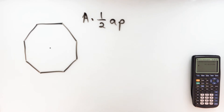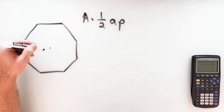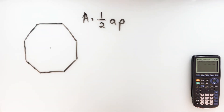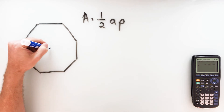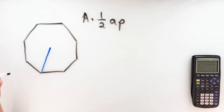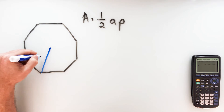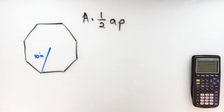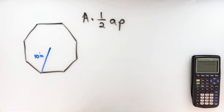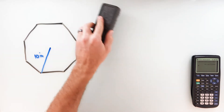Formulas are great if you know the apothem and the perimeter — but what if you don't? What if you're given maybe a radius? Let's say we have a regular octagon and we know a radius of 10 inches. Here's where my alternate triangle formula is going to help. I'm going to bypass the one-half-AP formula because without an apothem or perimeter, I'd have to find both of those things, which takes quite a bit of time.